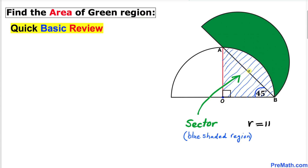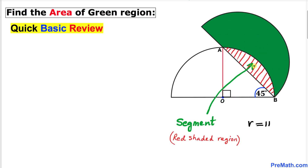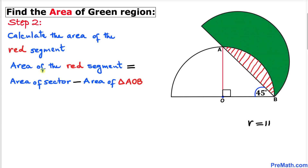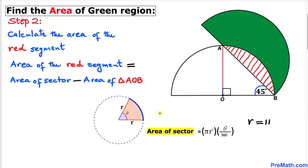This blue shaded region is called a sector, and this red shaded region is called a segment. Here's our next step: let's go ahead and calculate the area of this red segment. We know that the area of this red segment is equal to the area of this sector minus the area of this triangle AOB.